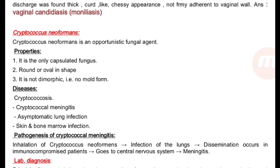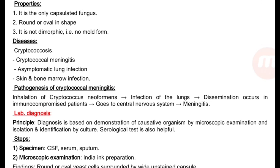Cryptococcus neoformans is an opportunistic fungal agent. Properties: it is the only capsulated fungus, round or oval, not dimorphic — no mold forms. Diseases: cryptococcal meningitis, asymptomatic lung infection, skin and bone marrow infection. Pathogenesis of cryptococcal meningitis: inhalation of Cryptococcus neoformans, infection of the lungs, then dissemination in immunocompromised patients to the central nervous system causing meningitis.